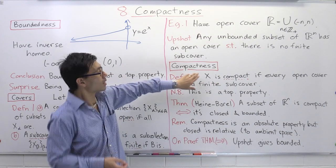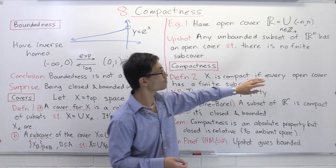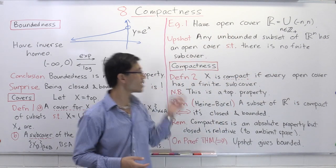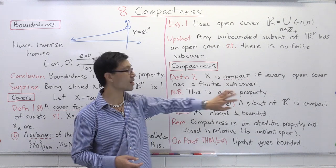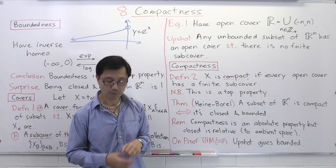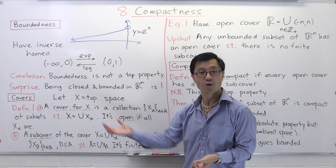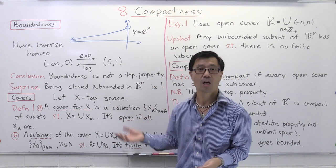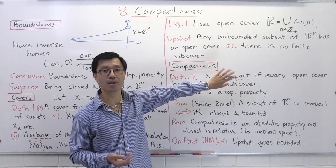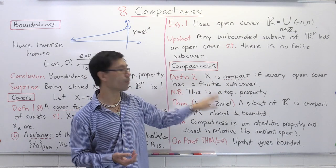This motivates the definition of compactness. We say that X is compact if, unlike in the previous case, every open cover has a finite sub-cover. That's the definition: every open cover has a finite sub-cover. To talk about open covers, you just need the notion of a topology, so all these things are defined in terms of topological data — the things used to define a topology — so this is a topological property.